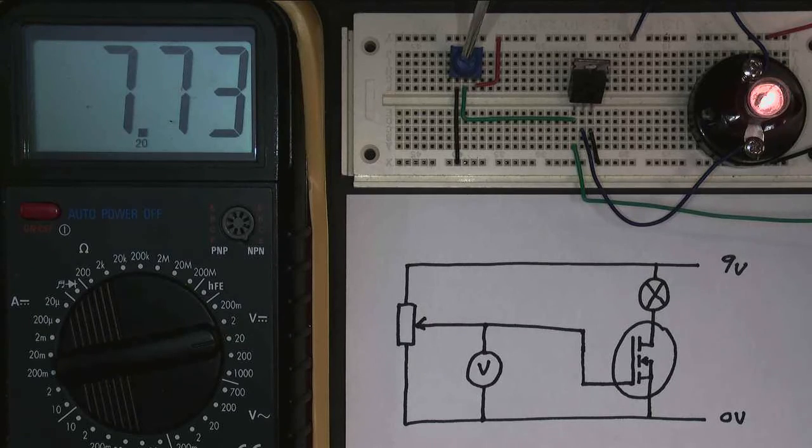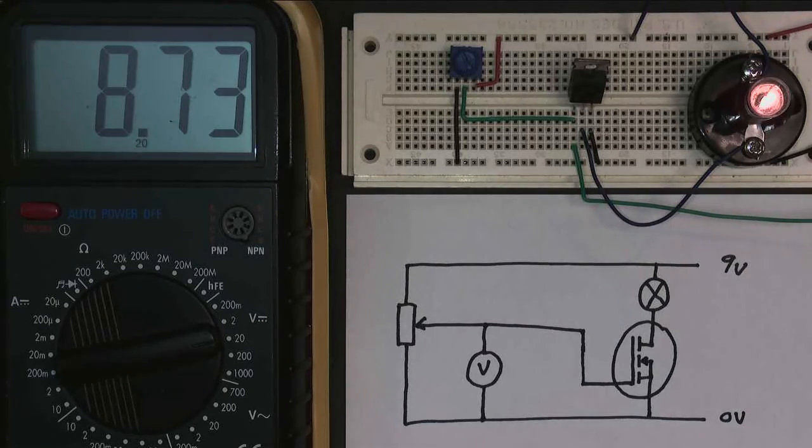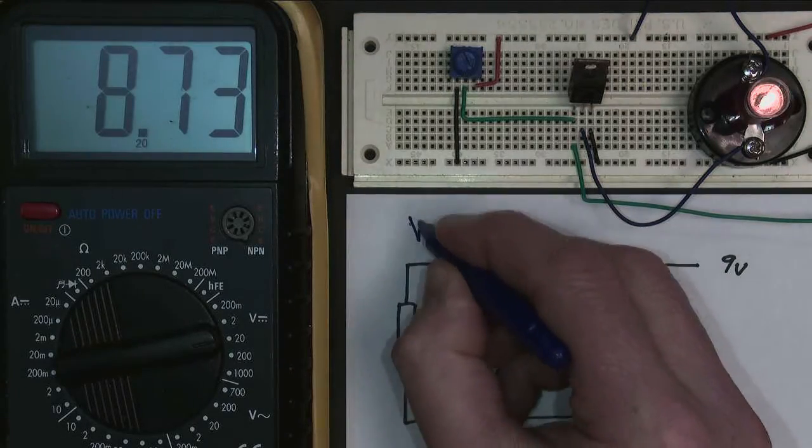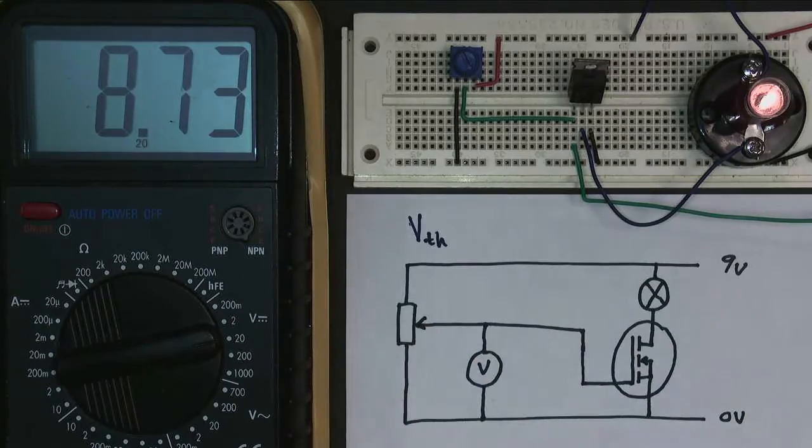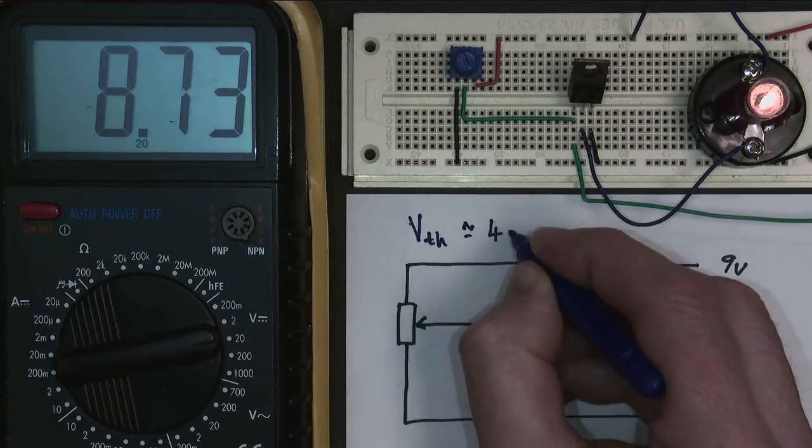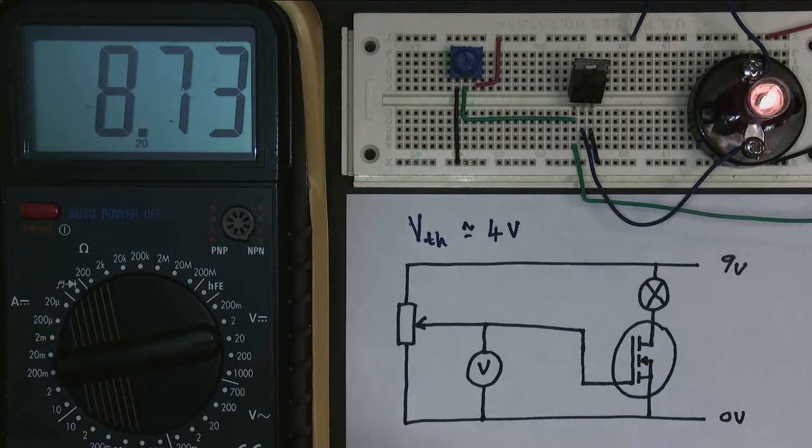And if I go up to higher voltages, nothing else happens. It just stays turned on. This voltage is called the threshold voltage. The threshold voltage is around about 4 volts for this particular MOSFET, although other MOSFETs have different threshold voltages.